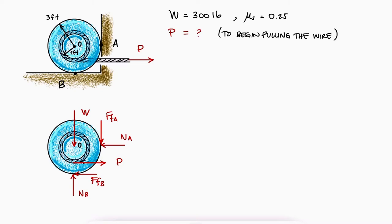Right before the spool of wire begins rotating, the sum of forces in both directions and the sum of moments about O should be zero. The sum of forces in X would include the friction force at B, which right before the rotation should be equal to its maximum value of μ times NB.